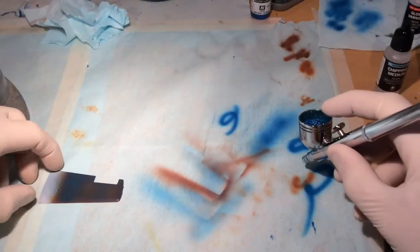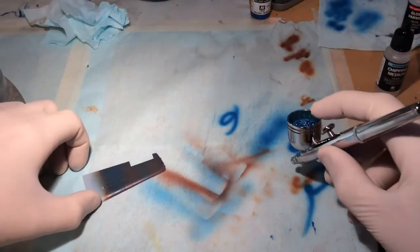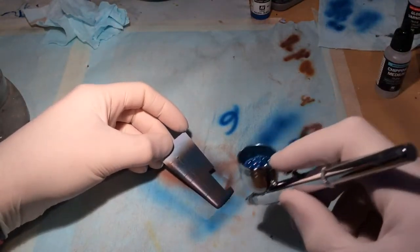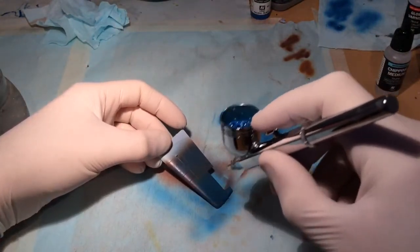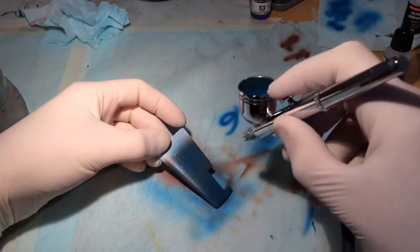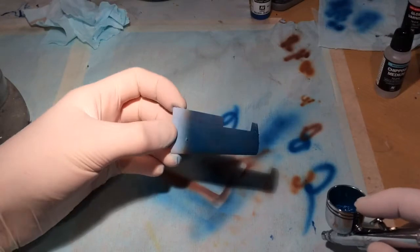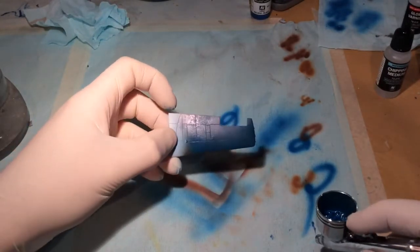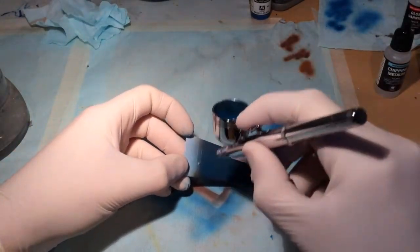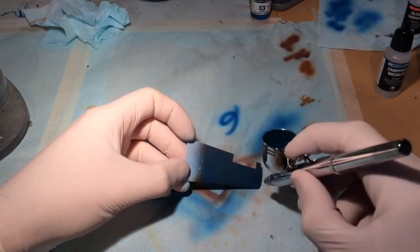Starting to get a solid color on there. Still some of the rust colors showing through, so once this layer's dry, we'll apply a bit more.